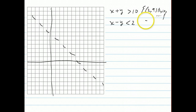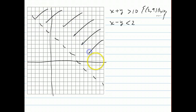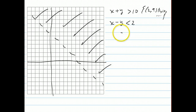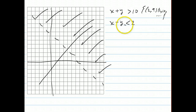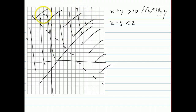If you take a point like (0, 0) and check it: 0 plus 0 is not greater than 10, so we shade the other side. Now if we do the same thing with x minus y is less than 2 and graph all the points that make it equal to 2, we test (0, 0): 0 minus 0 is 0, which is less than 2.